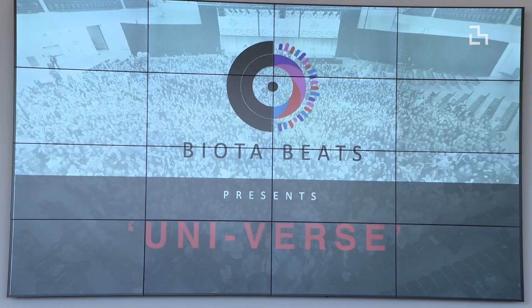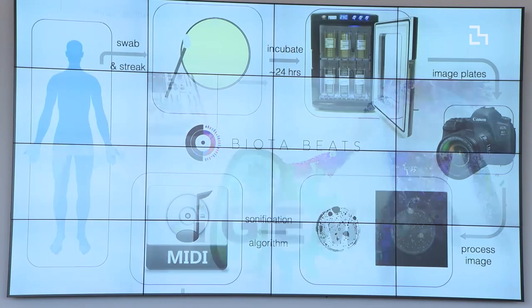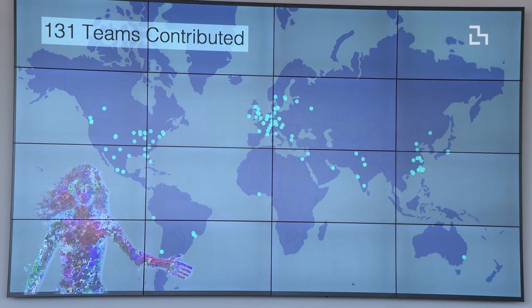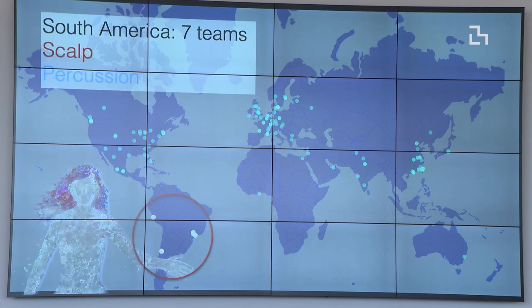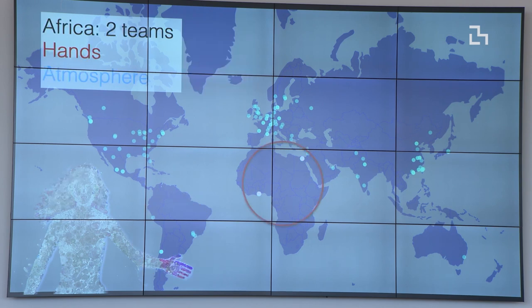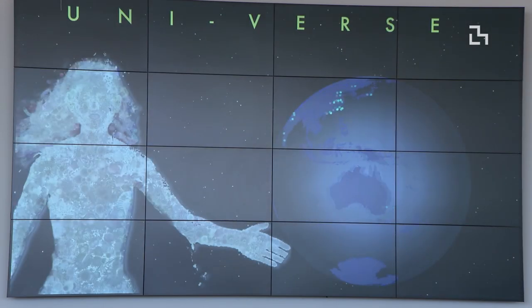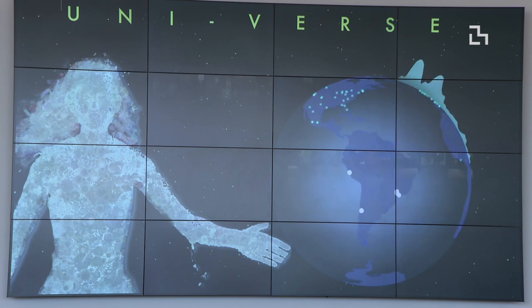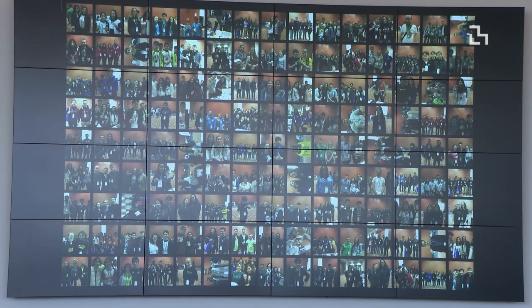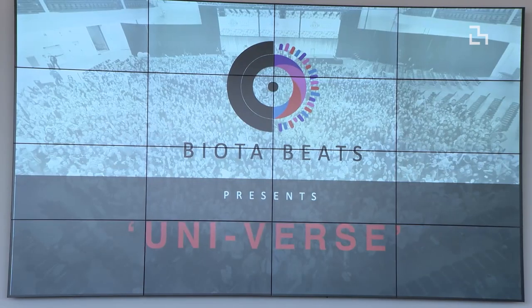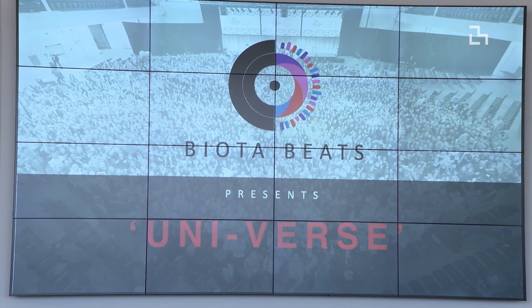Then we made beats out of iGEM — we sampled the microbes of about hundreds of students in a project called Universe. This looks like a coronavirus map, but it's not — this is where we sampled the different teams' organisms from. Each continent represented a different musical sound and a different body part, and then we created this really cool composition — you can look it up on YouTube. We had hundreds of students participate in this project, which is a really great example of an intersection between art, design, and technology.